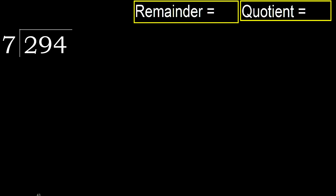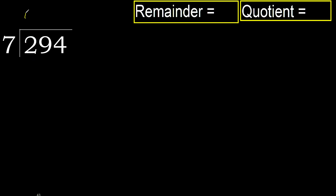294 divided by 7. 2 is less, therefore next 29. 29 is not less, therefore with 29, 7 multiplied by which number is nearest to 29 but not greater? 7 multiplied by 5 is greater, multiplied by 4 — 28 — is not greater.